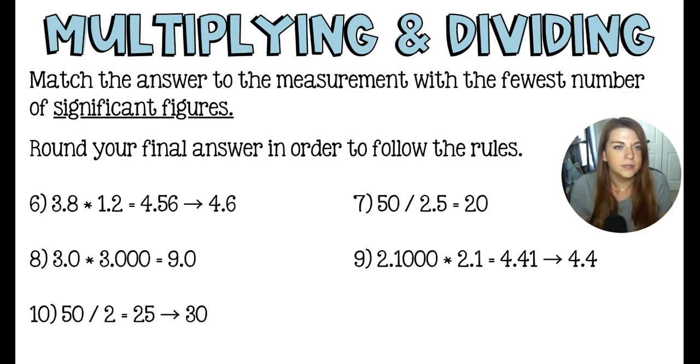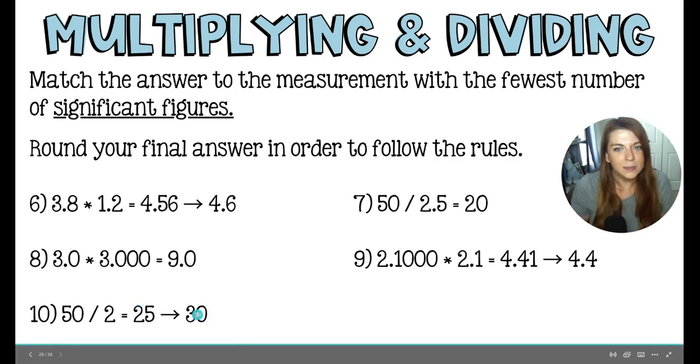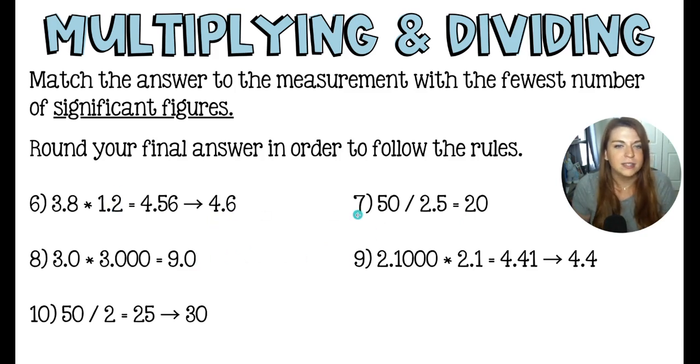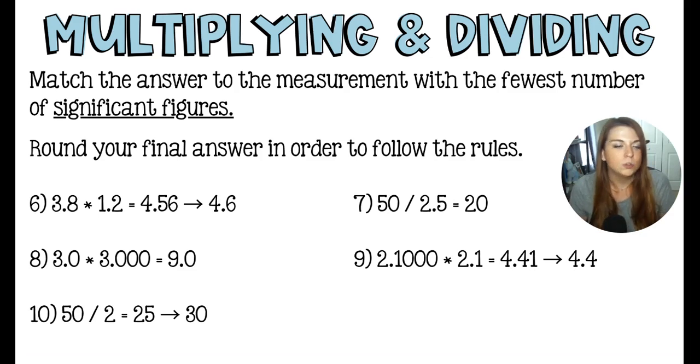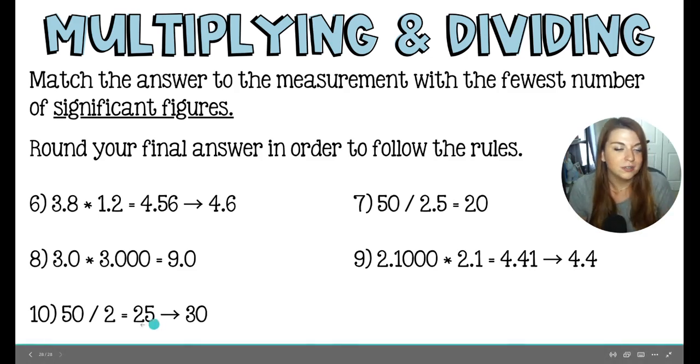So most of the time, sig figs don't do this to us. It's typically these upper four questions. It's super close. The numbers make sense. But in the case where you're getting 50 divided by 2 equals 30, it tells you how junky the tool is, which is why measuring with precision is super important.